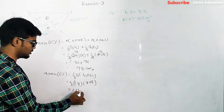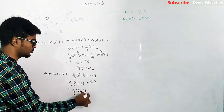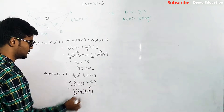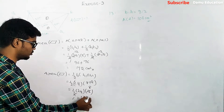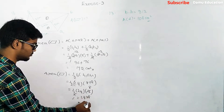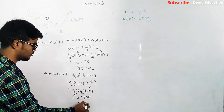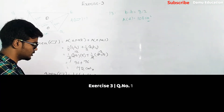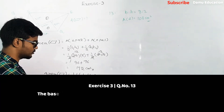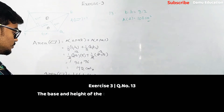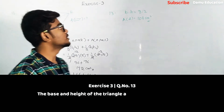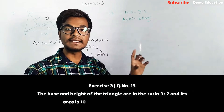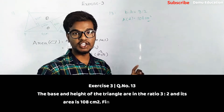Using method 2: ½ × 24 × 16 = 24 × 8 = 192 centimeters square. Both methods give the same answer of 192 cm².